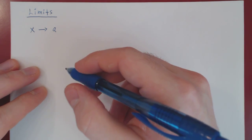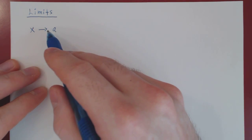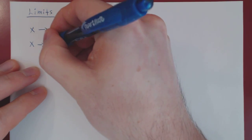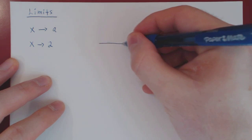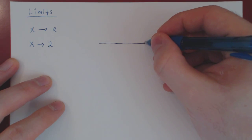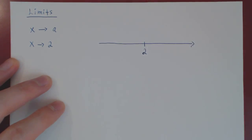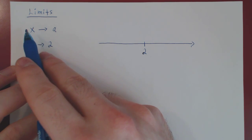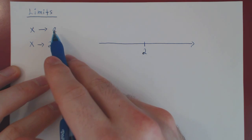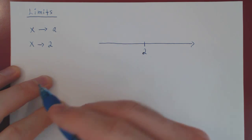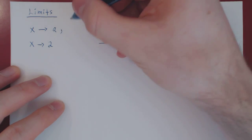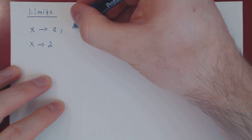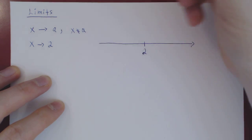Let's look at an example. We say x is approaching a, or x approaches a. We could write x approaches the value 2. Imagine a real line for x values. We say x approaches a if x is taking on values that are getting closer and closer to the value a, but never exactly equal to a. So x can be arbitrarily close to a — as close as we want — but never exactly a.